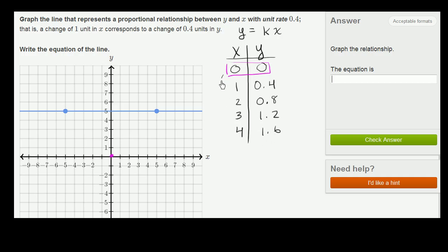Notice every time x is increasing by 1, y is increasing by 0.4. That's exactly what they told us here. Now if x increases by 1 again to 5, then y is going to increase 0.4 to 2.